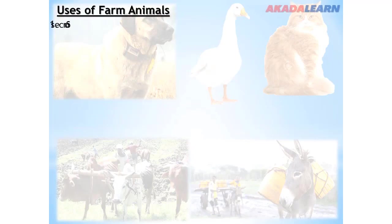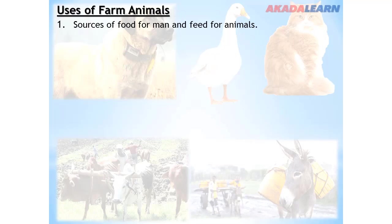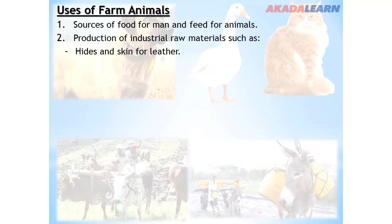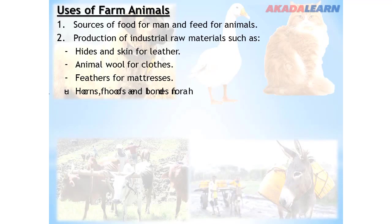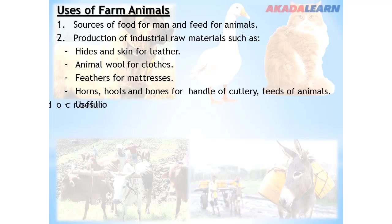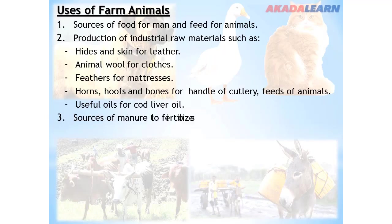Uses of farm animals: farm animals are used as sources of food for man and feed for other animals. They are also used for the production of industrial raw materials such as hide and skin for leather, animal wool for clothes, feathers for mattresses, horns, hooves, and bones for handles of cutlery and feeds. Farm animals also provide useful oils such as cod liver oil.